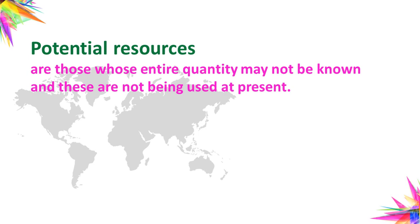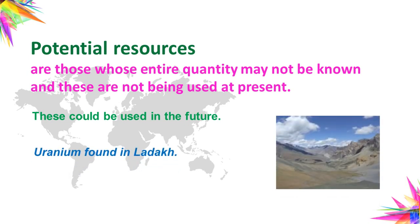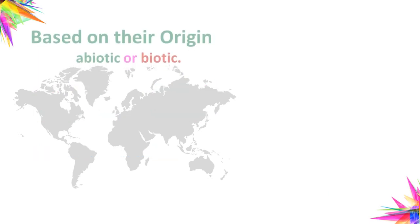Potential resources are those whose entire quantity may not be known and which are not being used at present, because we don't know their quantity and quality. These could be used in the future. For example, Rajasthan and Gujarat have enormous solar energy potential but we are not using it at present, because hydro power and thermal power cost less compared to solar energy. Uranium found in Ladakh is also given as an example of a potential resource.